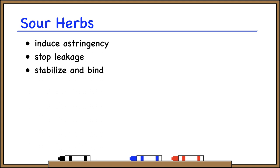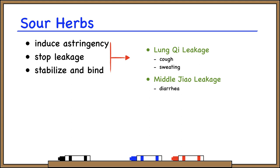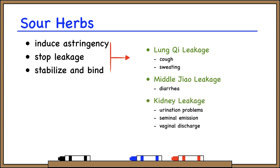What does leakage look like? It depends on the organ. With leakage of lung qi, we can get chronic cough or sweating, because the lung controls respiration and governs the exterior and the opening and closing of the pores. For middle jiao leakage, we can see diarrhea. Kidney leakage can involve urination problems like frequent, copious, or uncontrolled urination, or it can involve essence, like seminal emission or vaginal discharge. So sour herbs induce astringency to prevent or stop this leakage. Importantly, sour herbs are used for long-standing cases due to deficiency — if a patient has cough or sweating due to an exterior attack, don't use sour herbs; you'll just trap the pathogen in the body.